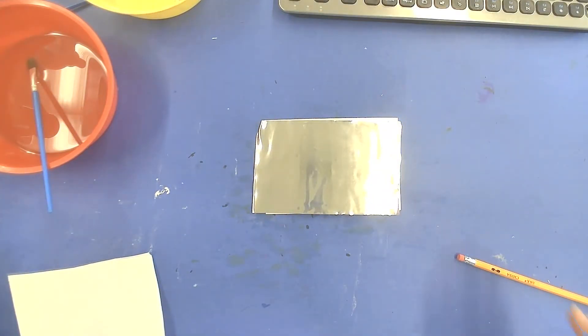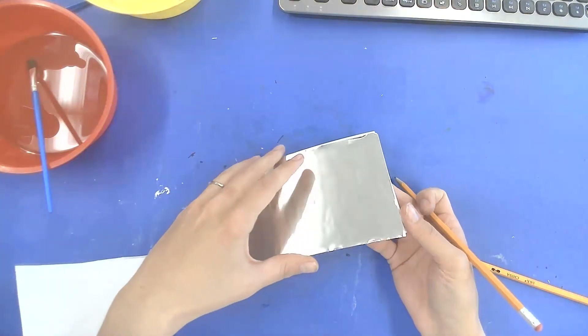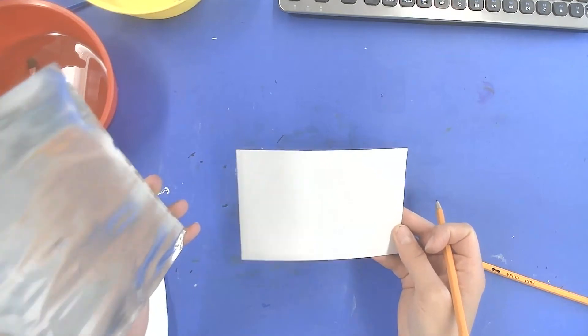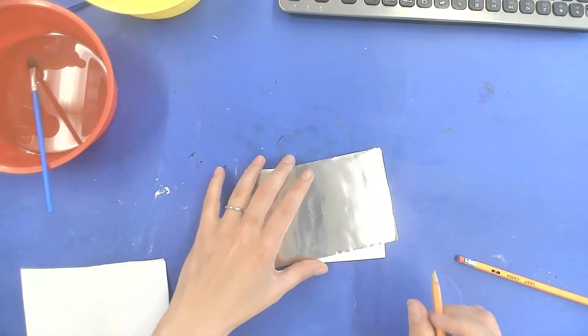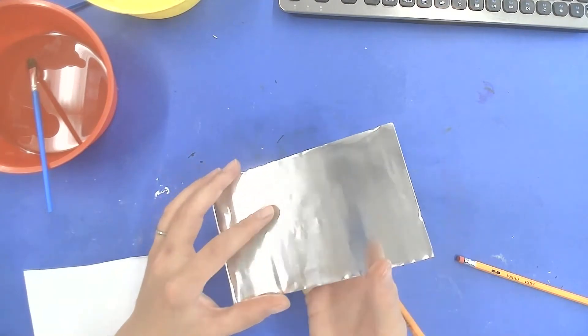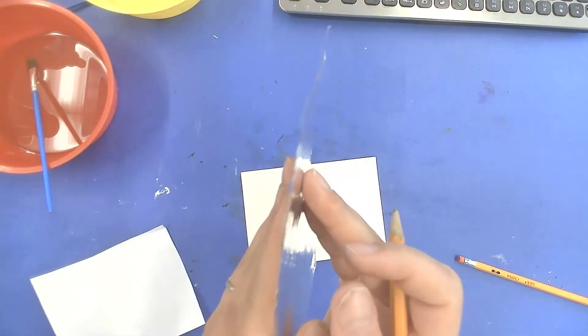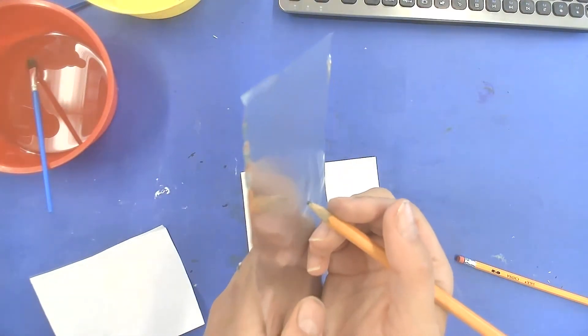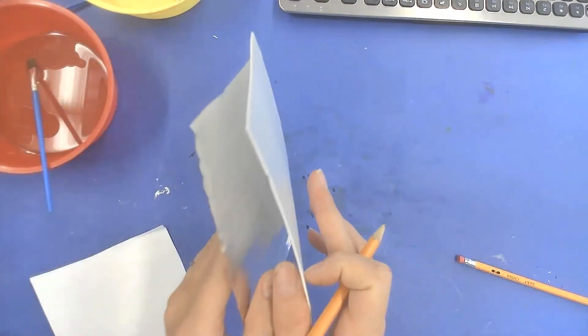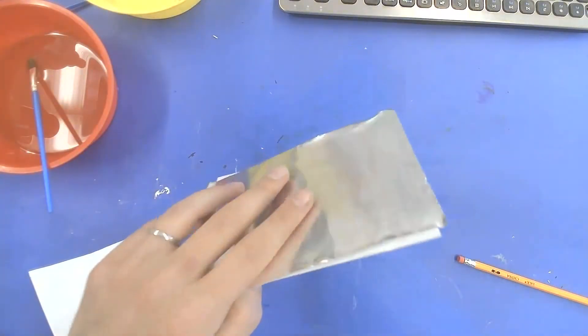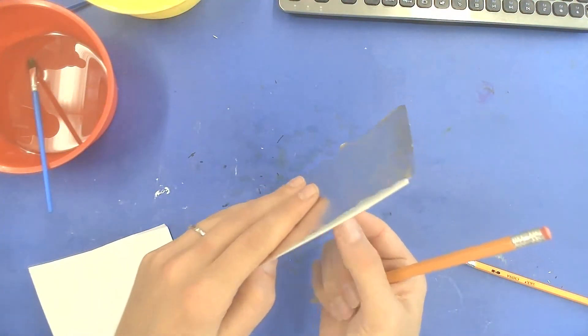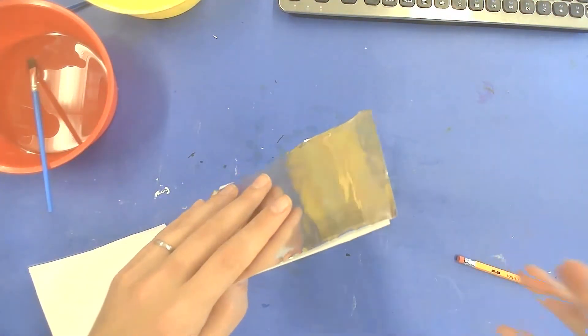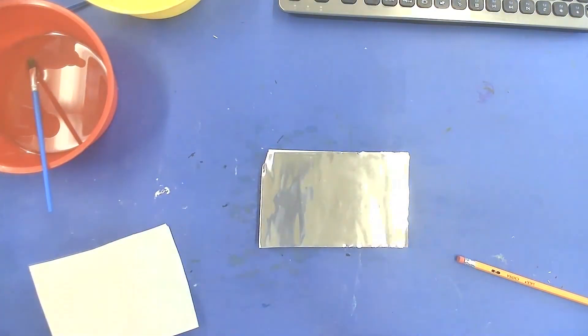All right now first things first this foam has to be underneath your metal the entire time because your table is hard and if you're trying to make the metal stick up and you put it on a super flat surface there's nowhere for the metal to go. The foam underneath is soft and it's a little squishy so when you push down into the metal it's going to go into the foam and have a little place to raise up. Put it in front of you horizontal.